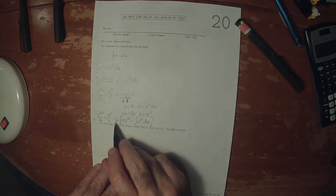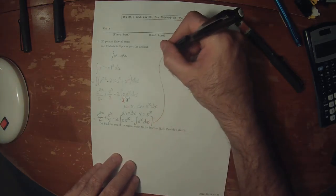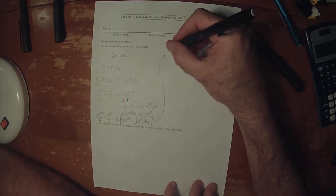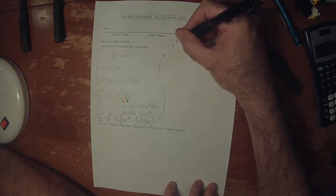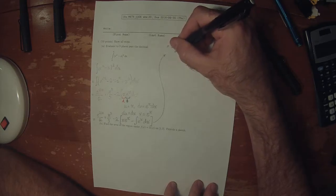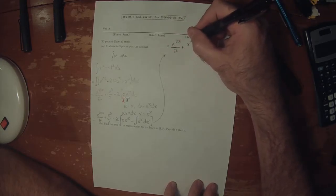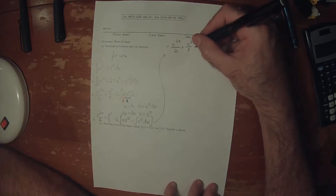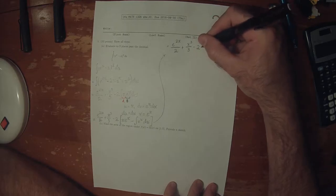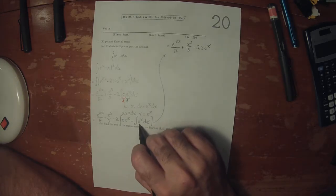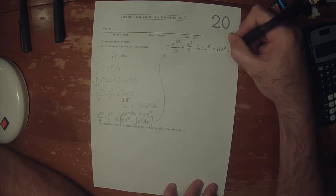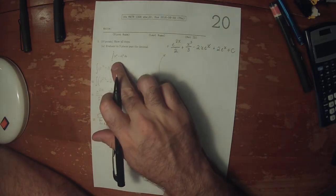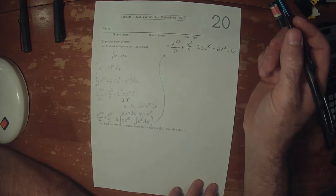That negative 2 needs to distribute. So that is e to 2x over 2 plus x to 3 over 3 minus 2 x e to x. Antiderivative of e to x is e to x, so then plus 2 e to x plus constant. So that's the antiderivative. Now we can invoke the fundamental theorem.